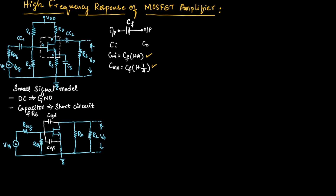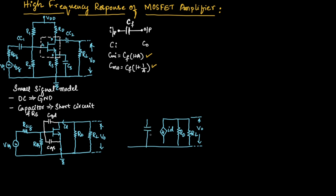Let us write the hybrid pi equivalent model of this circuit. At the output side, we have a drain current ID in parallel with resistors RD and RL, and across RL we measure the output voltage V0. At the input side, we have capacitor CGS, RTH, R signal, and input voltage VTH. The capacitor CGD is common between input and output side, so we write CGD common between both sides.